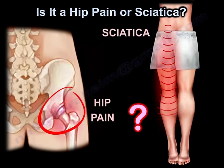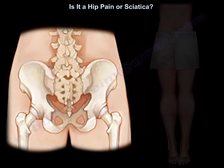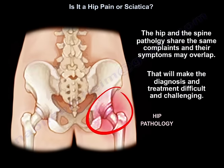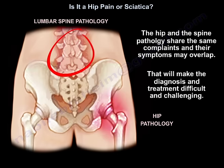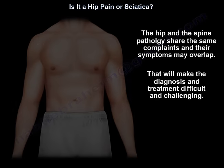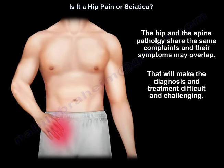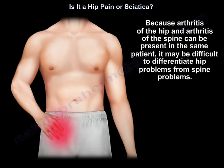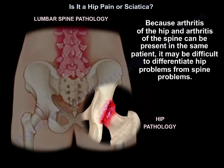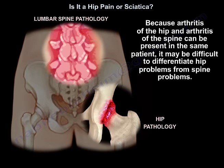Is it hip pain or sciatica? The hip and the spine pathology share the same complaints, and their symptoms may overlap. That will make the diagnosis and treatment difficult and challenging. Because arthritis of the hip and arthritis of the spine can be present in the same patient, it may be difficult to differentiate hip problems from spine problems.